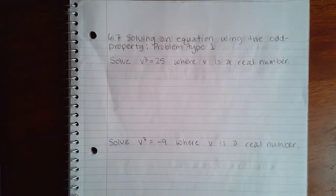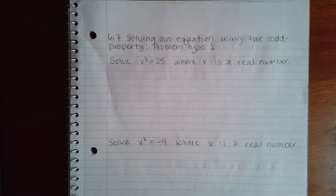Here in this video we're going to cover 6.7 solving an equation using the odd property, problem type 1. So it says solve v³ = 25 where v is a real number.